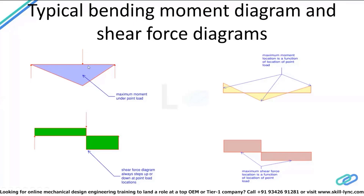First, let's consider a simply supported beam with a concentrated load acting on it. What we would see is that the maximum moment produced in the beam is directly under the point load itself. For a pin-to-pin support, the maximum moment is only at where the concentrated load is acting, and that's what this bending moment diagram indicates.